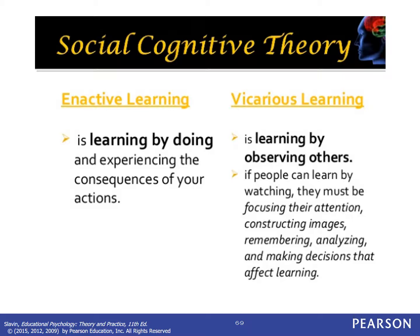There are some important terms to understand in social cognitive theory. Enactive learning is learning by doing and experiencing the consequences of your actions — for example, if I want to learn how to sew, I have to plow through lessons and try to do the sewing, and at the end I usually don't wind up with a very good product. Vicarious learning, however, is learning by observing others — not doing it yourself, but watching others and what they do. If people can learn by watching, they must focus their attention, construct mental images about what's going on, remember those images, analyze them, and then make decisions about what they're going to do.